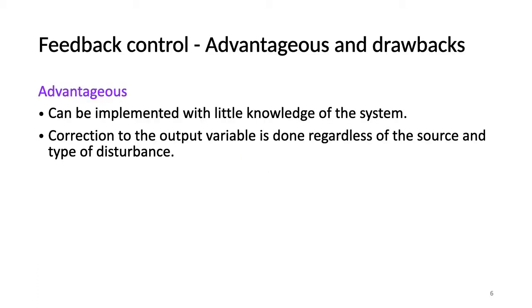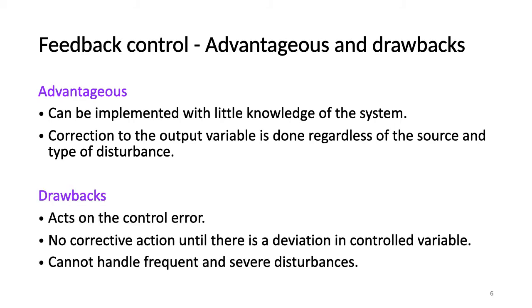Feedback control advantages and drawbacks. Advantages: it is widely used in industrial applications, can be implemented with little knowledge of the system, and correction to the output variable is done regardless of the source and type of disturbance. The main drawback is that it acts only when there is an error — the control signal cannot be adjusted before the control error differs from zero. For frequent and severe disturbances, the process may not settle out with feedback control, and theoretically feedback control cannot achieve perfect control.